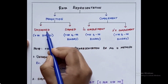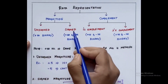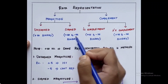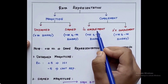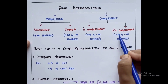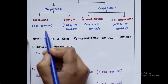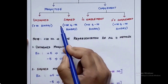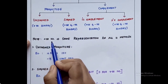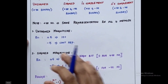Unsigned representation is used to represent any positive binary number, while signed representation is used to represent both positive and negative binary numbers. One's complement and two's complement can also be used for positive and negative binary numbers. The important thing to note is that for a positive number, the representation remains the same for all four methods.